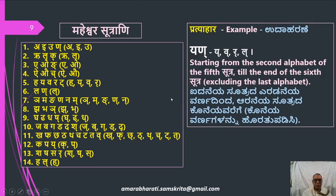Now we see one more Pratyahara: Yan. Starting from the second alphabet of the fifth sutra, which is Y, through N — the letters Y, V, R, L are included, excluding the last marker alphabets.